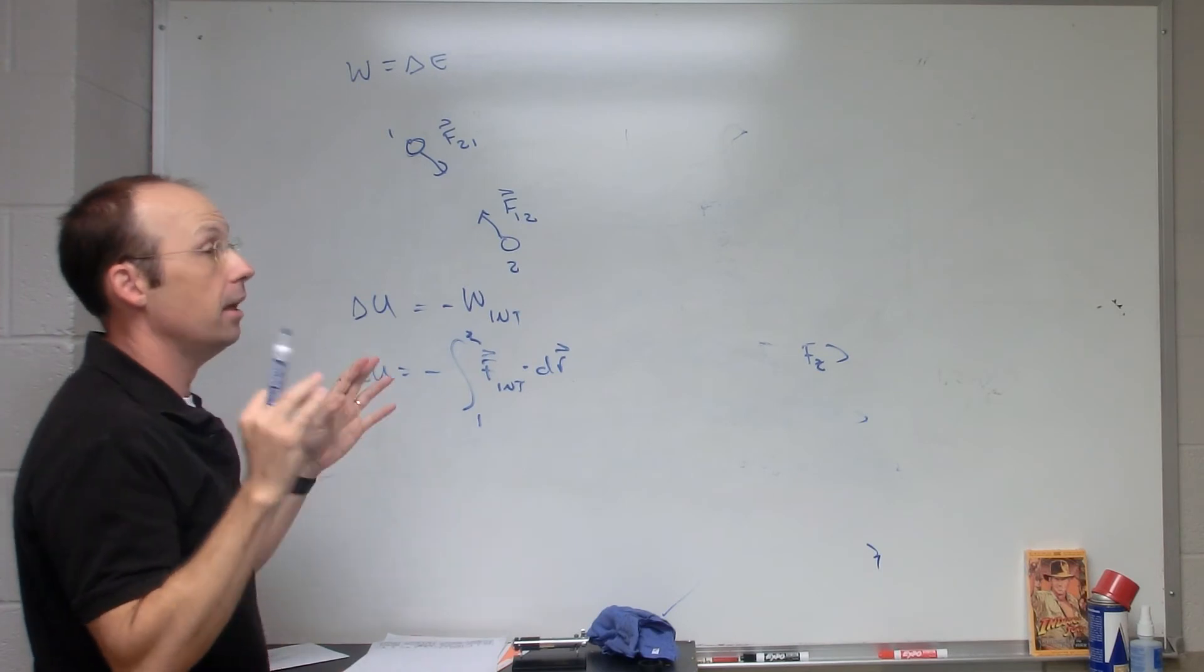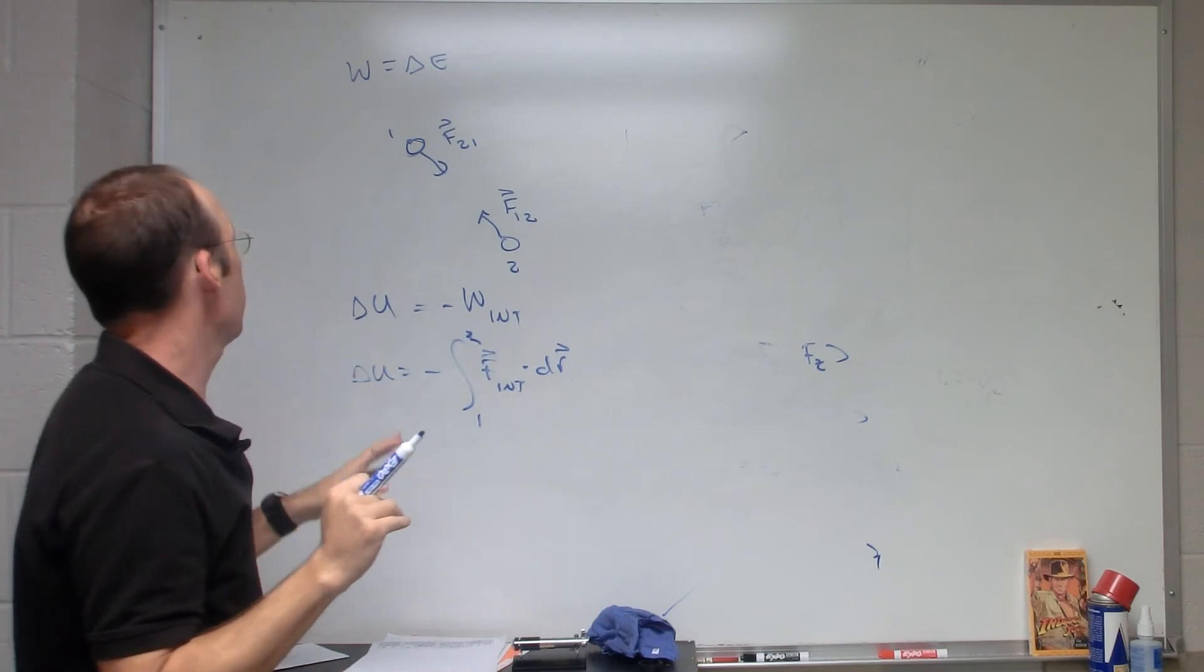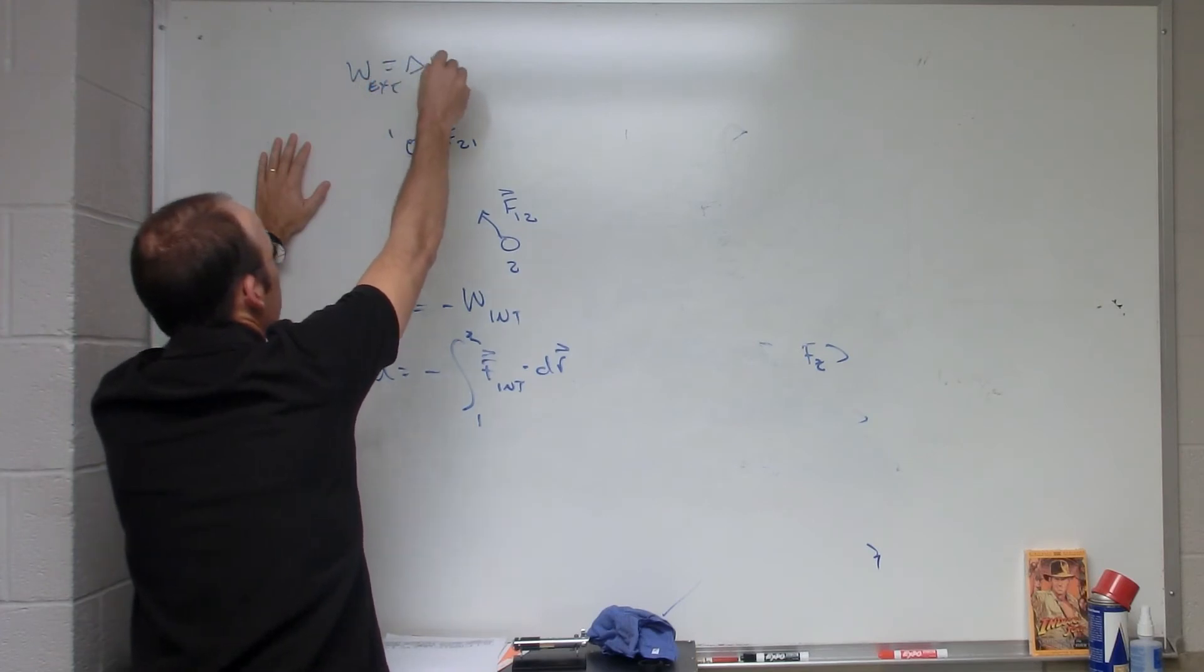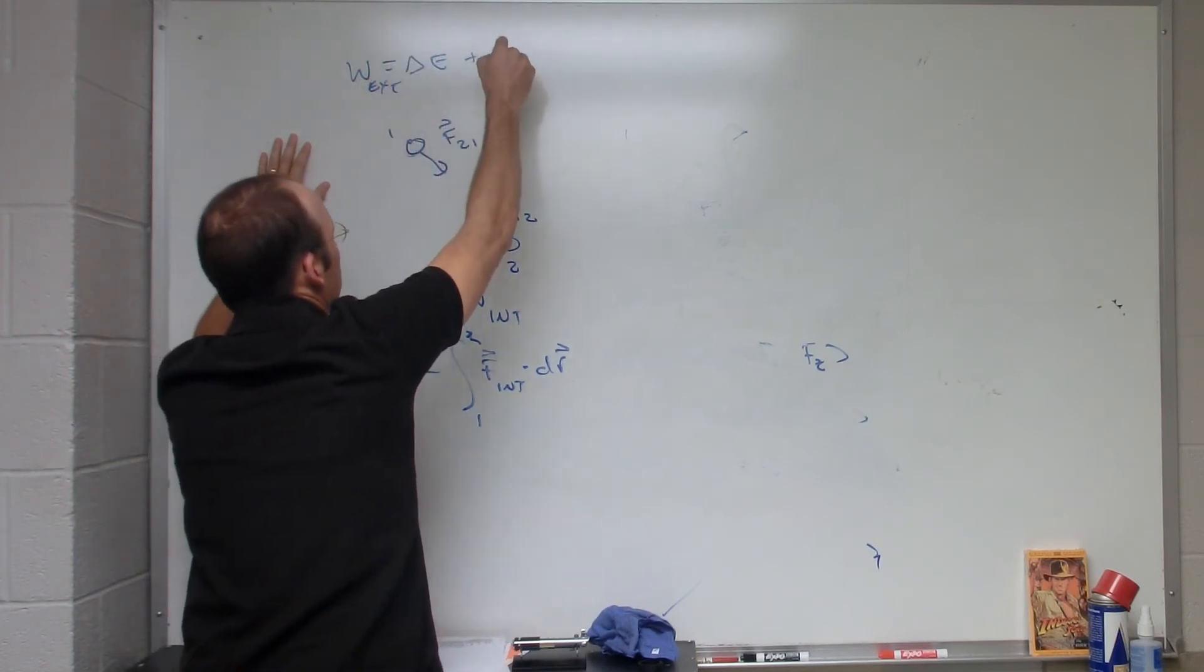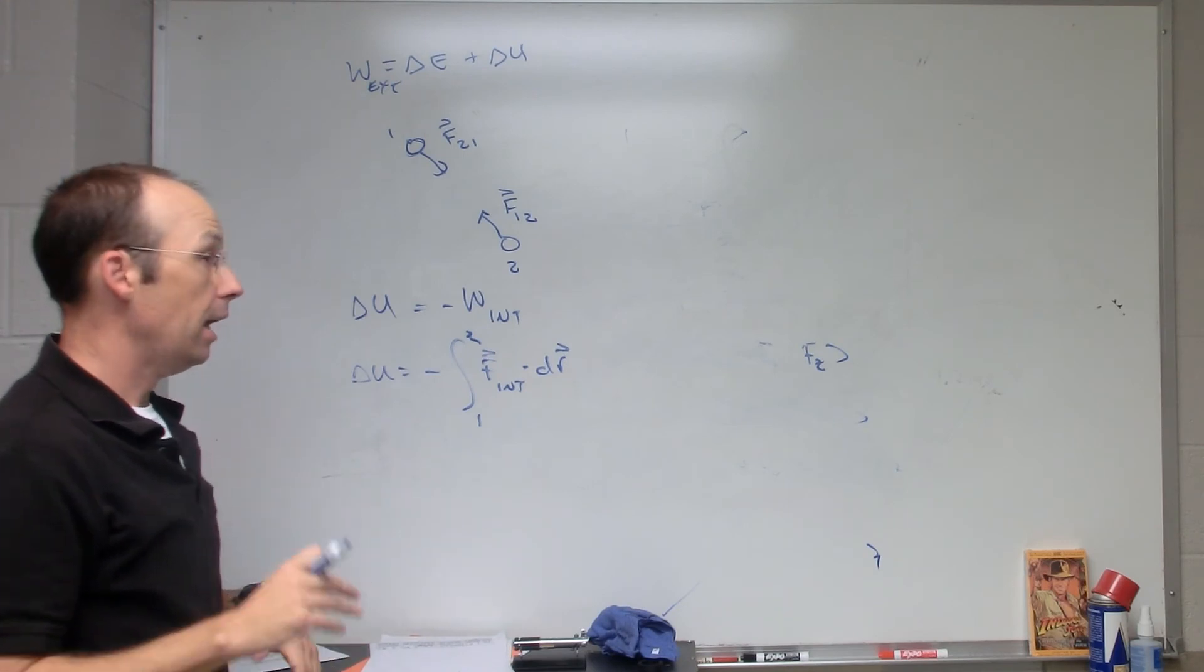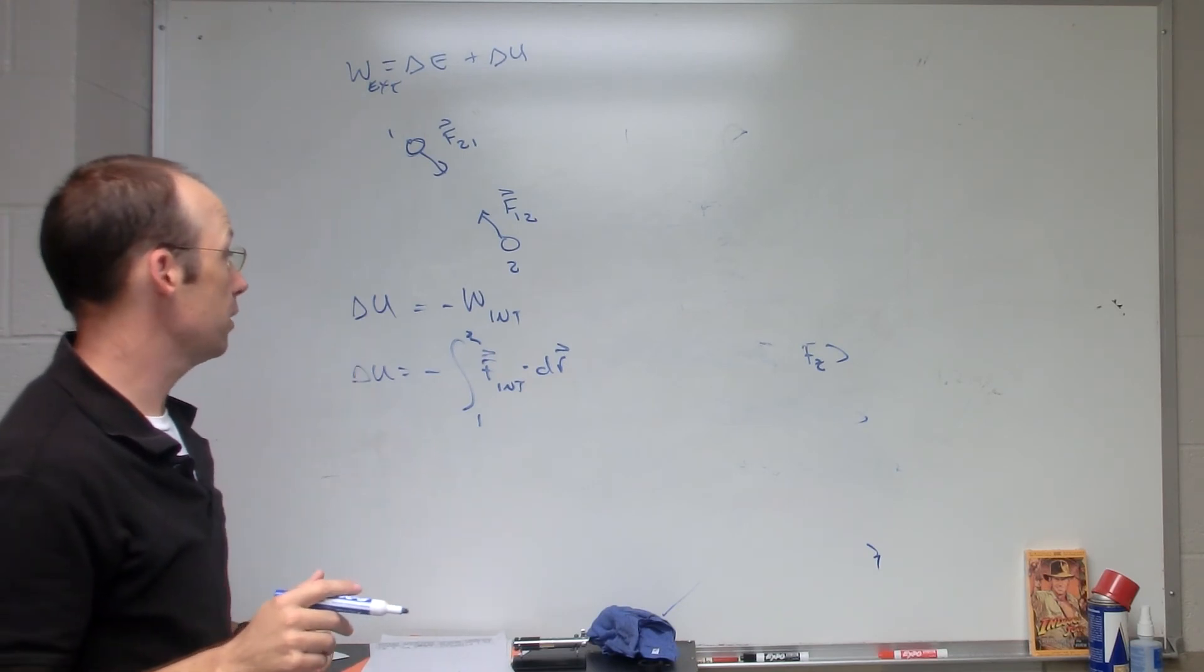Typically you could write this as work external equals change in energy plus delta U, where delta U is a change in potential. And in this chapter you saw three types of potential energy.